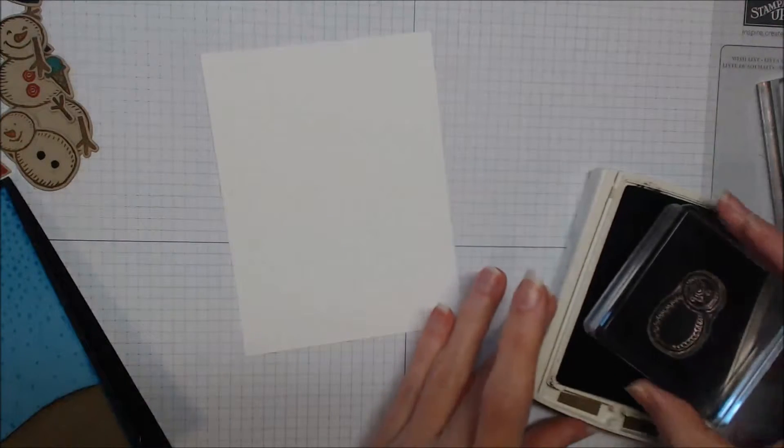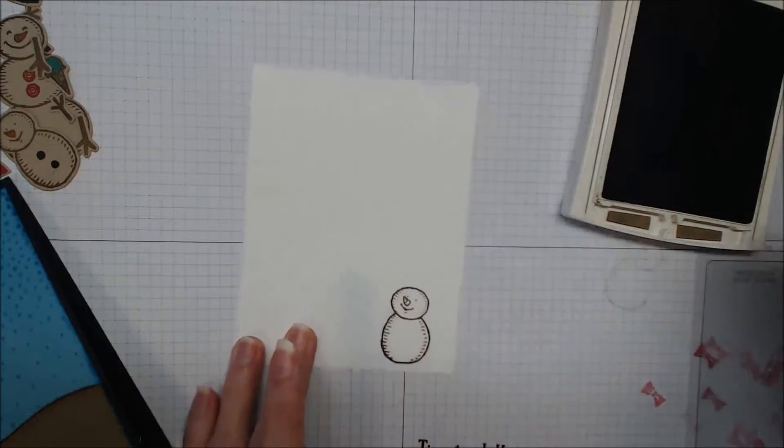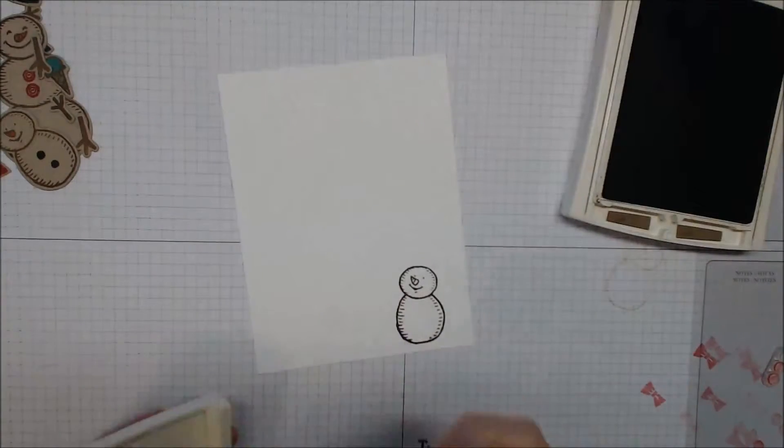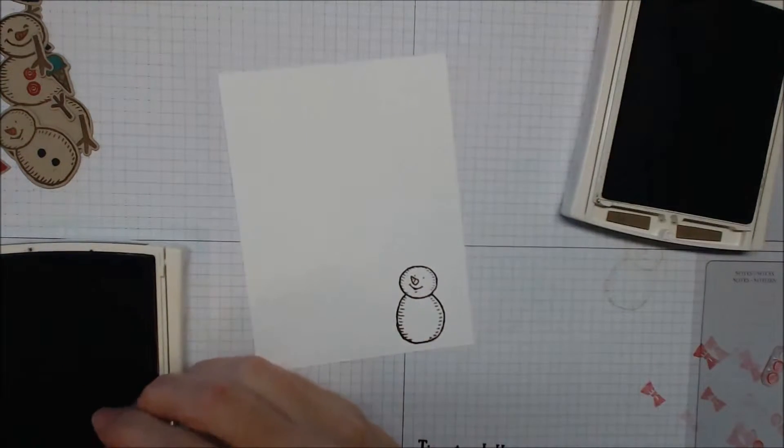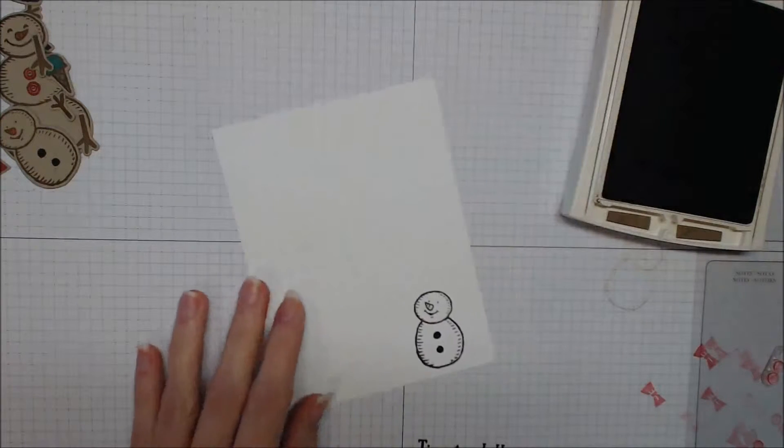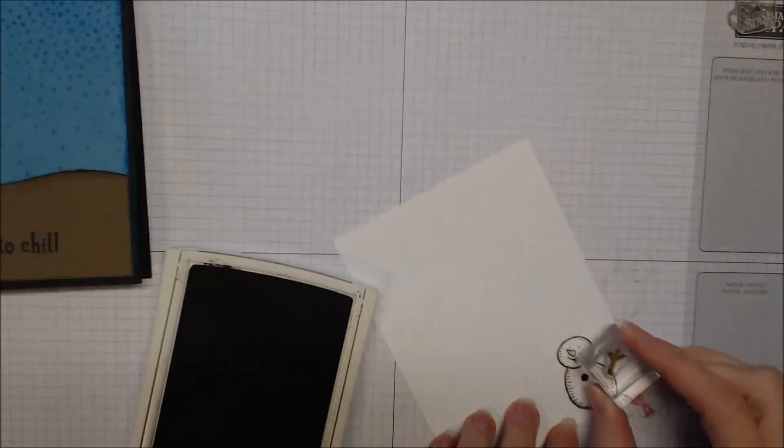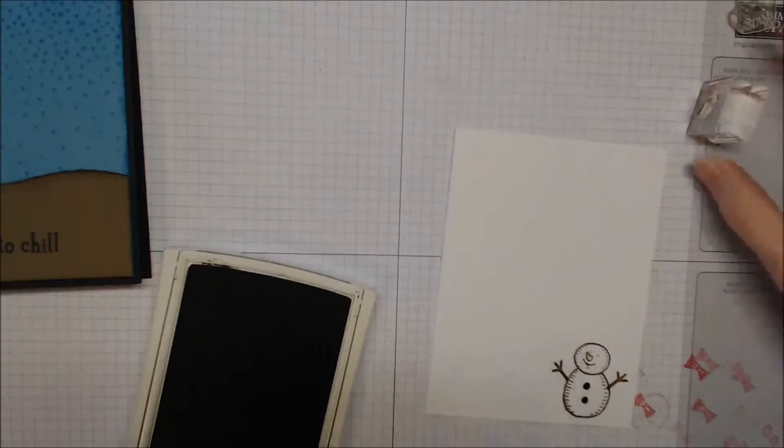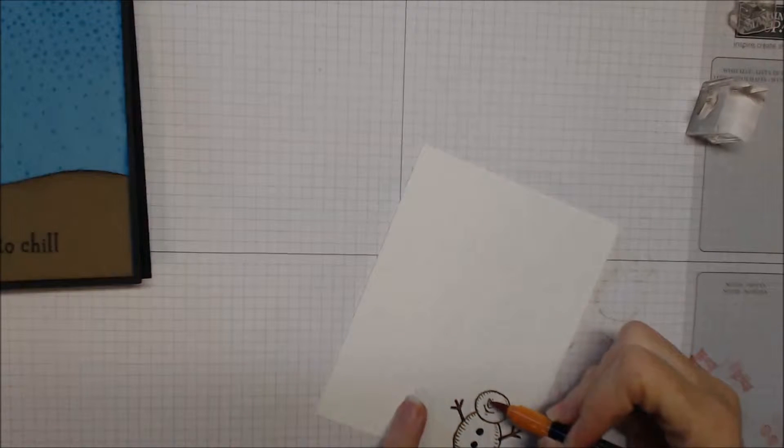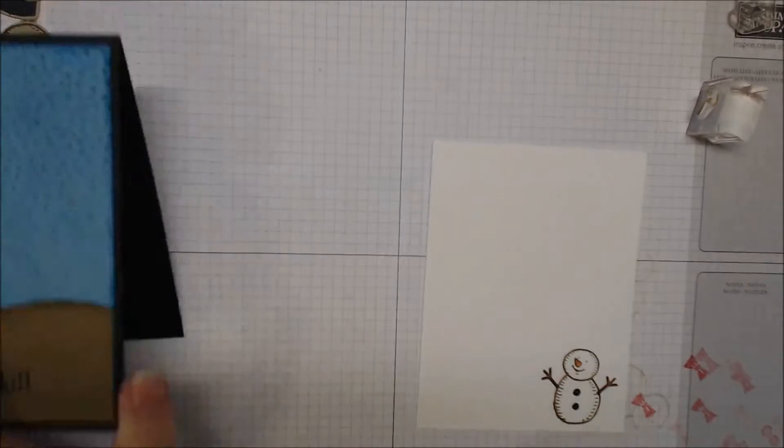So let's do the inside panel. This is 4 by 5¼ piece of Whisper White. And I forgot to do this earlier when I was doing all of my other stamping. This Mudman is done in soft suede and his little coal buttons in basic black. And then we're going to do his arms in soft suede as well. I prefer doing all of my stamping at once while my images are dirty and I have my inks out. But I forgot. So we got it done now.